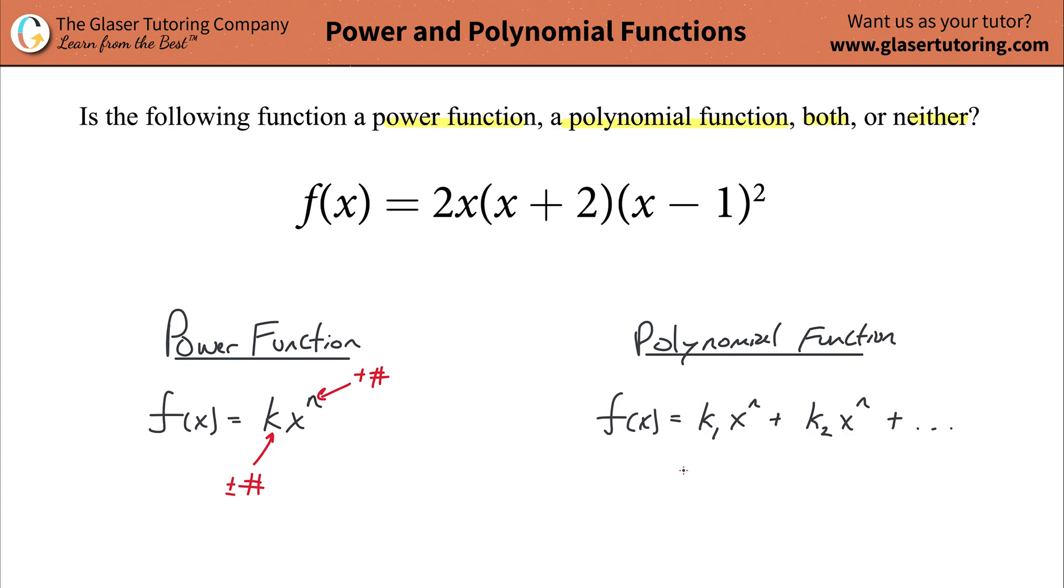Okay, so anyway, these k's, that's still positive or negative, some coefficient, some number. That's a variable, and that's going to be some positive exponent, represented by a value.